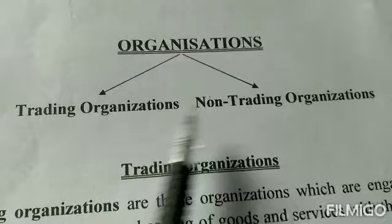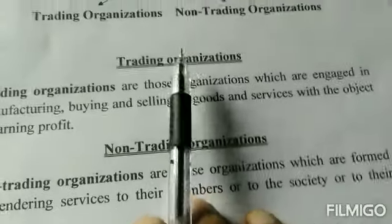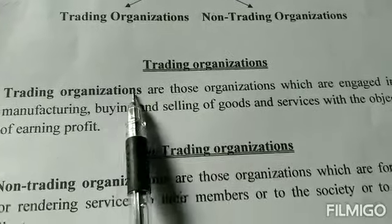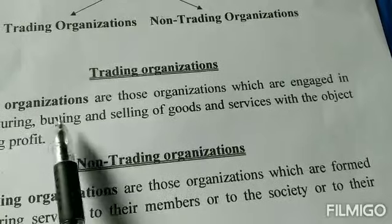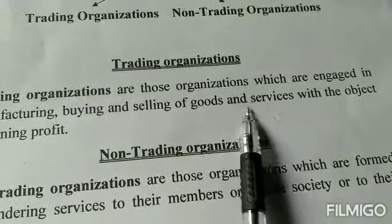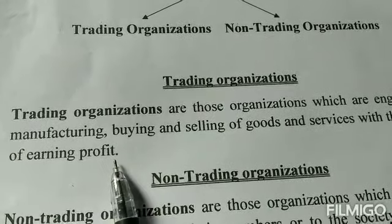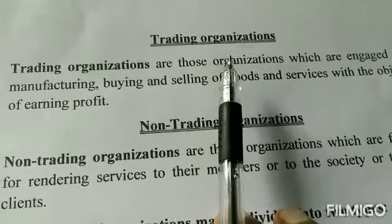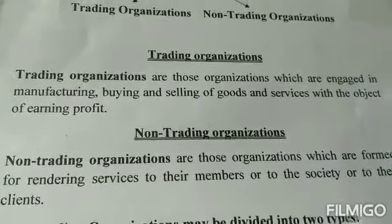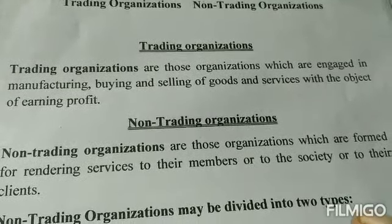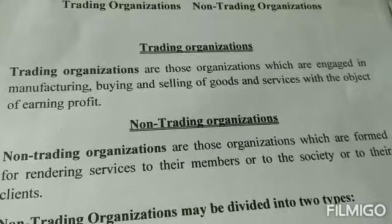One is trading organizations and another is non-trading organizations. Trading organizations are those organizations which are engaged in manufacturing, buying, and selling of goods and services, with the objective to earn profit. Any organizations which are involved or engaged in manufacturing, buying, and selling of goods and services, and whose objective is to earn profit, we can call it trading organizations.